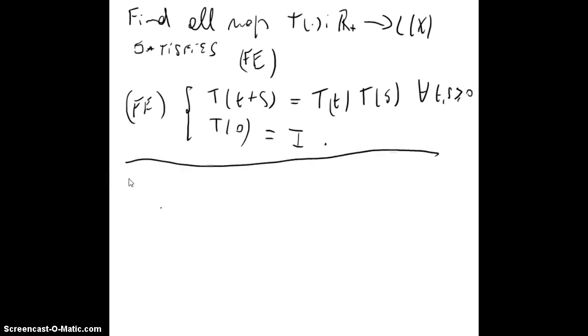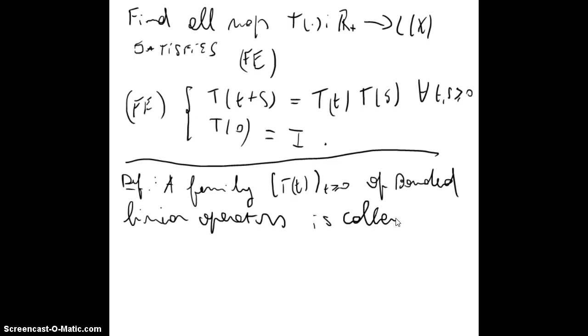So we'll define a family T(t), t greater than or equal to zero, of bounded linear operators. This is called one parameter semigroup on X. Now X is a Banach space if it satisfies the functional equation.